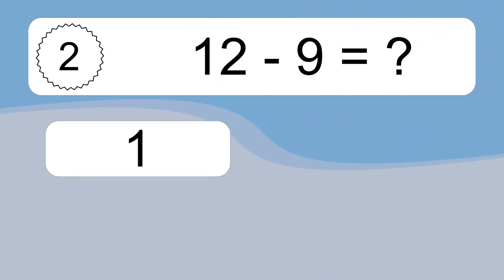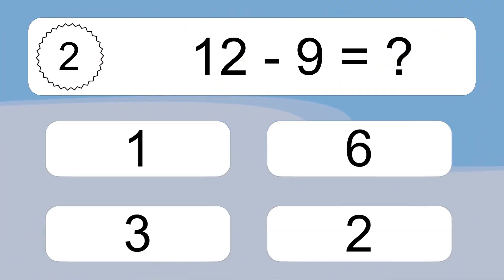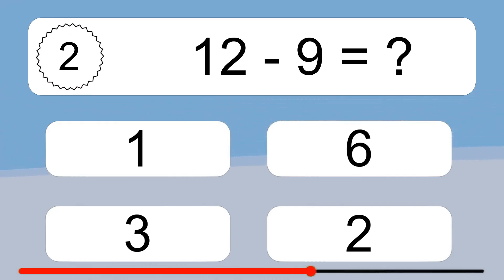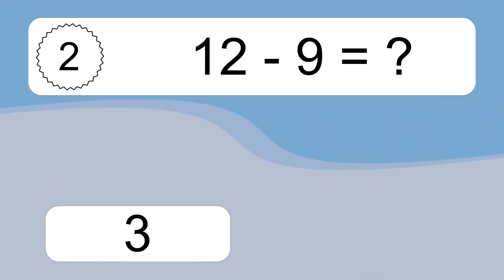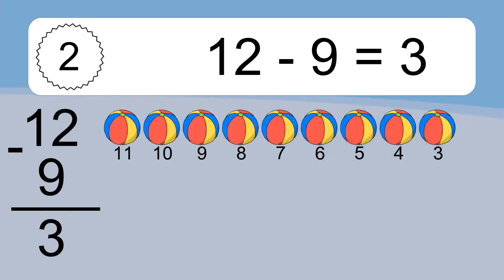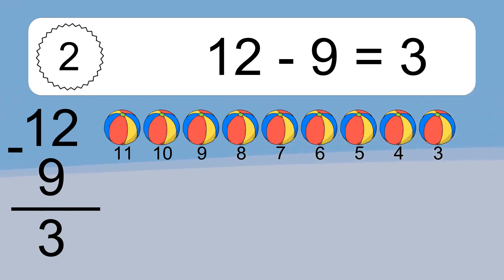12 minus 9 equals what? 12 minus 9 equals 3. Let's count it: 11, 10, 9, 8, 7, 6, 5, 4, 3.